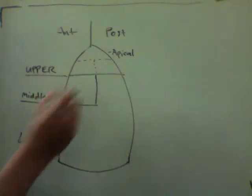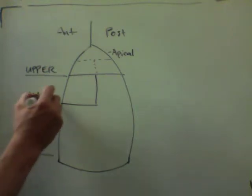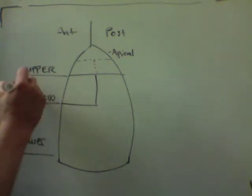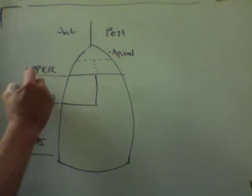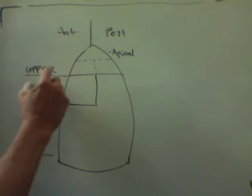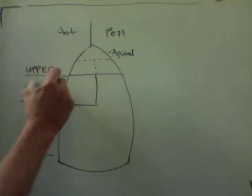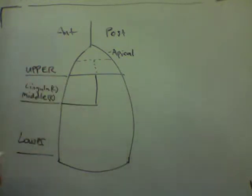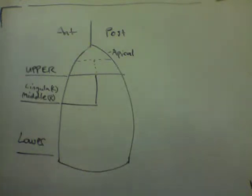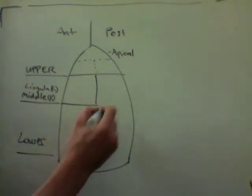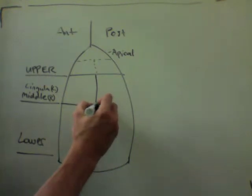This is the middle lobe on the right and the lingula on the left. The lingula is technically on the upper lobe on the left — the upper lobe on the left doesn't have a middle lobe, but the lingula is the equivalent because they have the same drainage position.